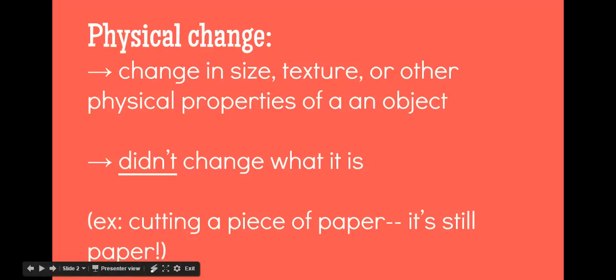Before we do that, let's review. Remember, a physical change is any time there is a change in size, texture, or other physical properties of an object. Some of the other evidence you can use is change of shape, change of phase or state of matter, change of mass, or any time something dissolves. This is a physical change because it didn't change what it is. For example, if you cut a piece of paper, it's still paper.